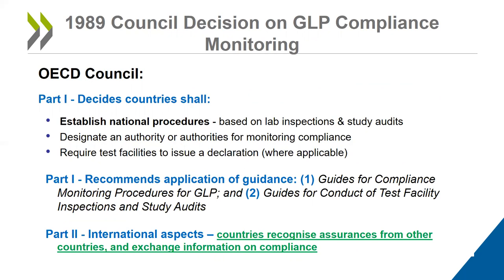That completes the description of the 1981 Council Act. In 1989, another council decision was put forth on the aspect of compliance monitoring. Now that the GLP principles had been established, this system was put into place to ensure compliance with the GLP principles. Countries shall establish national procedures to ensure compliance based on lab inspections and study audits, and designate an authority or authorities for monitoring compliance. The Council decision also recommends application of various guidance in relation to compliance monitoring and outlines international aspects to ensure that countries recognize assurances from other countries and exchange information on compliance.